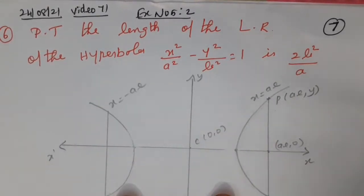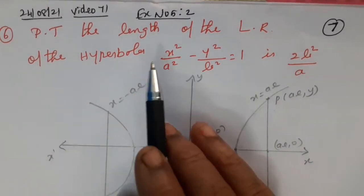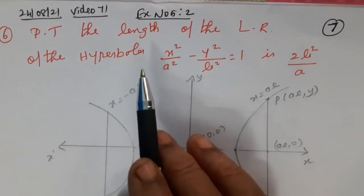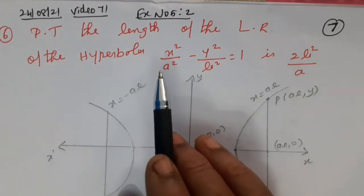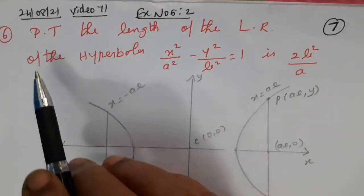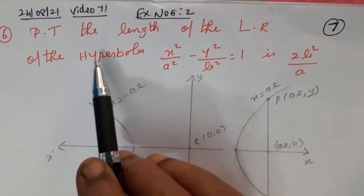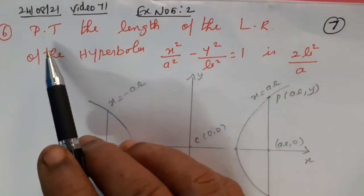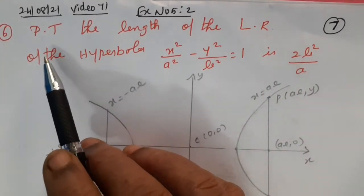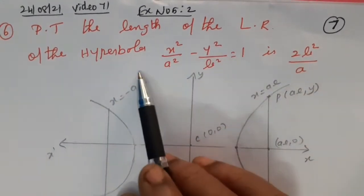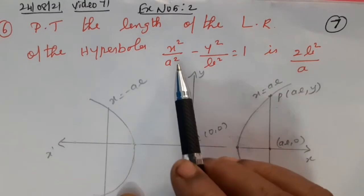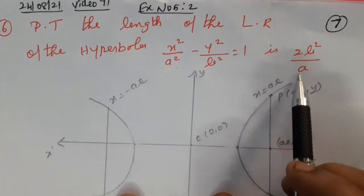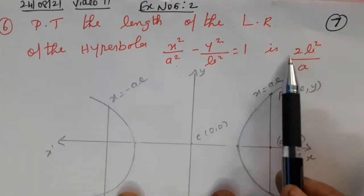In this second video, I am going to continue with exercise number five. This is not based on the parabola, not based on the hyperbola — it is based on areas. We are going to prove the result: the length of the latus rectum. We will prove that the length of the latus rectum of the hyperbola x² / a² − y² / b² = 1.